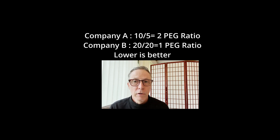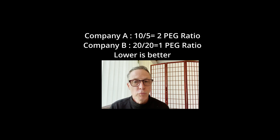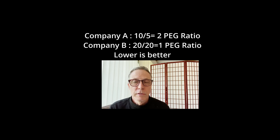Whereas Company A had a lower valuation based on P/E ratio alone, when we incorporate earnings growth, Company B actually has a lower PEG ratio, making it look more valuable — because that's what you're really paying for when you buy a stock: future earnings growth. If the earnings growth were the same or similar you'd obviously want to stick with Company A, but in this case you might consider going with the higher P/E company because it has a higher growth rate and lower PEG ratio. Using the P/E and PEG ratio together is a good start on evaluating a company's valuation.